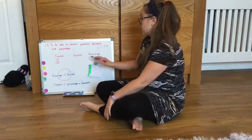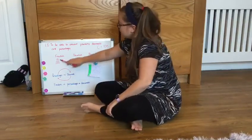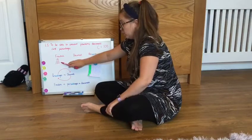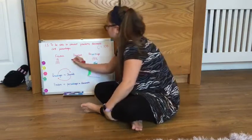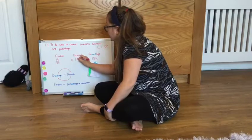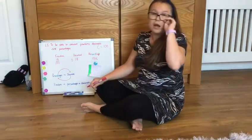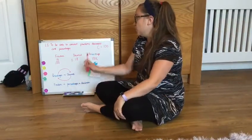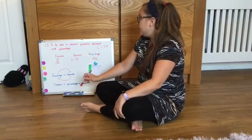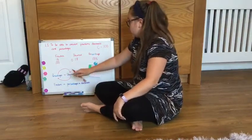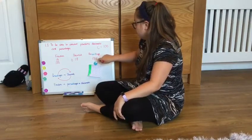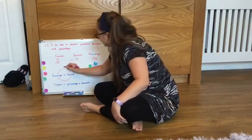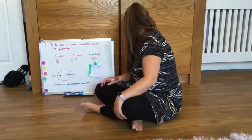Now if I was to then turn that into a decimal, well what the fraction really says is it's 18 out of 100, so it's 18 divided by 100. So I need to do 0.18. Remember in my class we spoke about shifting the numbers in our place value columns to help us. So from percentage to decimal I am dividing by 100.